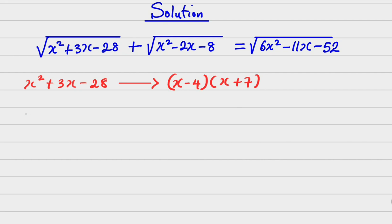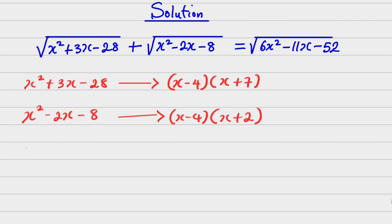Then having x squared minus 2x minus 8, once factorized, I am going to have x minus 4 into x plus 2. Also, x squared minus 11x minus 52, once factorized, I am going to have x minus 4 into...